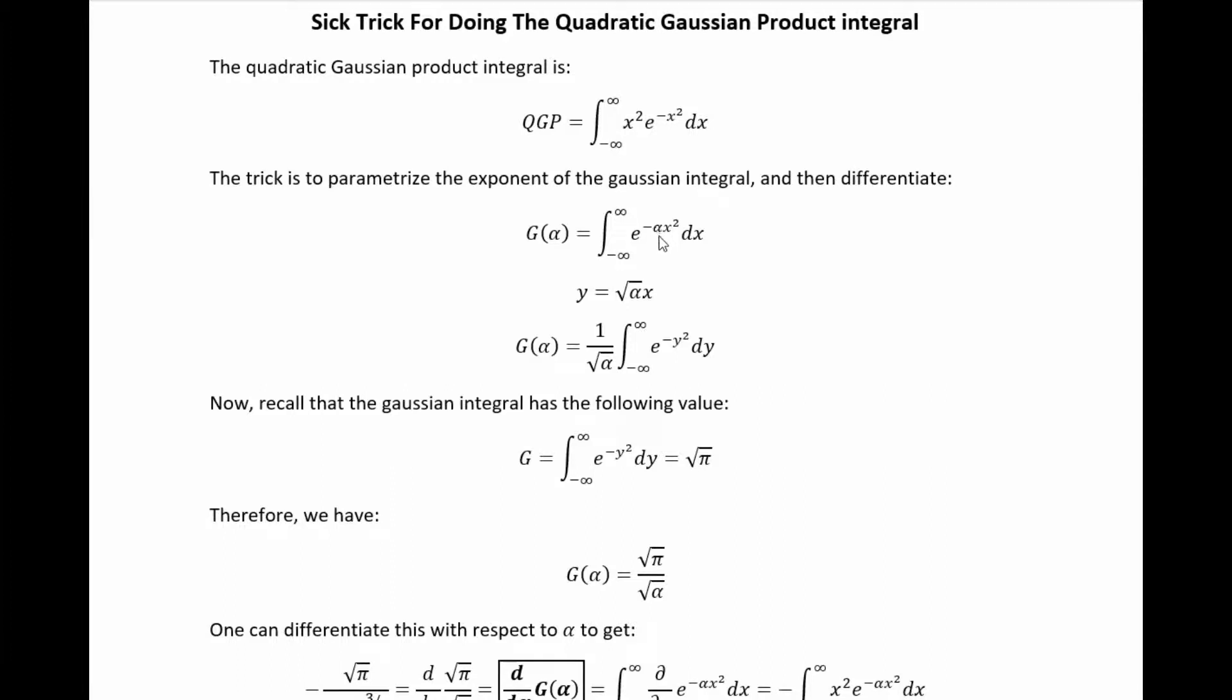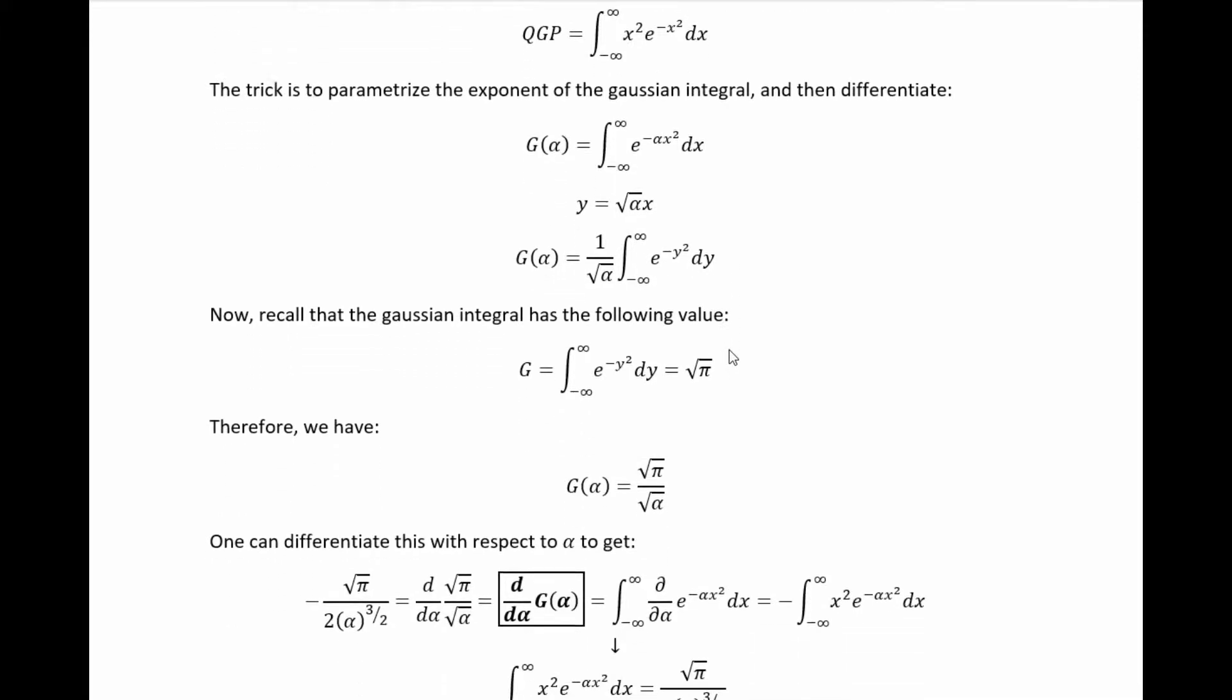because we know the value of the straight-up Gaussian integral, we can do a simple substitution to work out what the value of this alpha parameterized version is. Specifically, if we take y equal to root alpha times x,